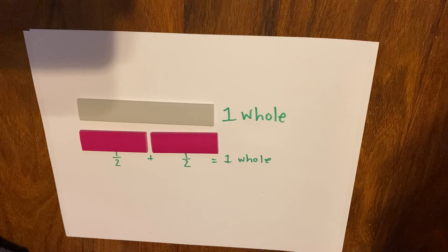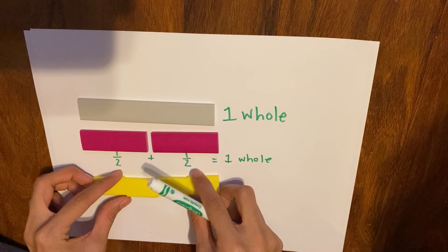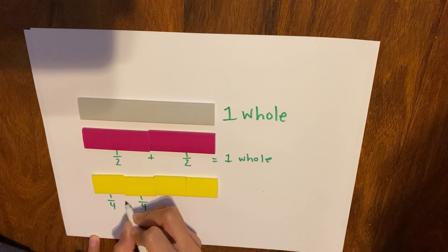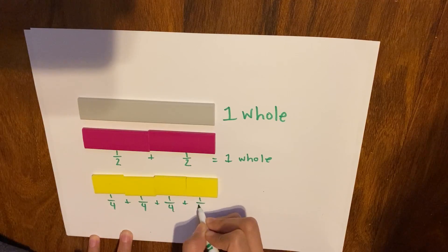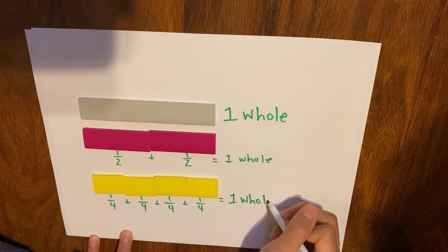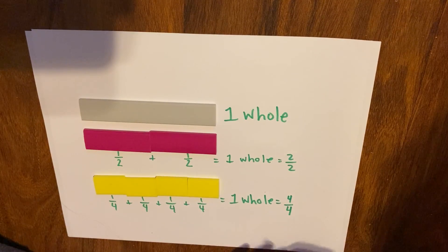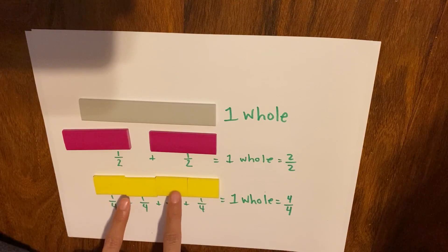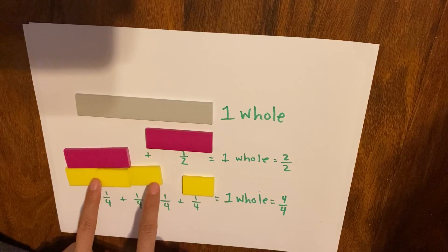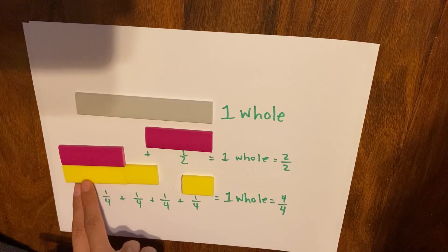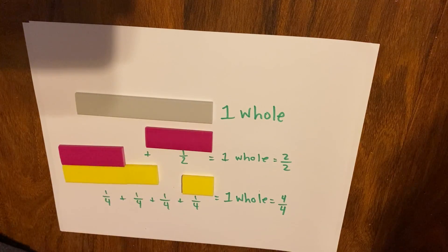Now if I get my fourths — because we were comparing 1 half and 3 fourths — 1, 2, 3, 4, you can see that they are all equal. So I know that 1 fourth plus 1 fourth plus 1 fourth plus 1 fourth equals 1 whole. I know 1 whole is equal to 2 halves, and I know 1 whole is equal to 4 fourths. Again, we were comparing 1 half and 3 fourths. If I go ahead and pull these together, which one do I have more of — more yellow or more pink? Here you can see I actually have more yellow. So 3 fourths is greater than 1 half.